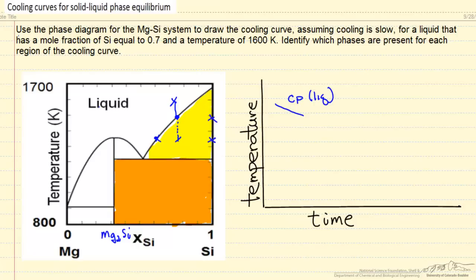We'll continue until we get to this point where we have solid silicon and liquid in equilibrium. On our cooling diagram, we're going to see the temperature changing more slowly once we start making the solid phase. The temperature is decreasing, but we're removing much more energy because of the phase change.